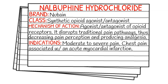Indications are moderate to severe pain and chest pain associated with an acute MI. I would be shocked if any ambulance actually carried this in the USA. The most common place you'll see it is in the OR for sedation and pain control purposes, and possibly in labor and delivery, but it's just not something we see pre-hospital.